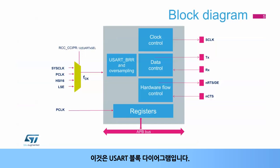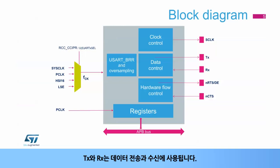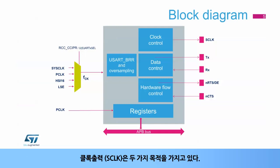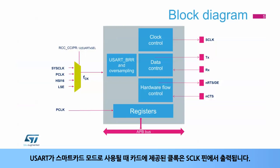This is the USART block diagram. The USART clock FCK can be selected from several sources: system clock, peripheral clock or APB clock, the high-speed internal 16 MHz RC oscillator, or the low-speed external 32.768 kHz crystal oscillator. TX and RX are used for data transmission and reception. N-CTS and NRTS are used for RS-232 hardware flow control. The driver-enable or DE, which is available on the same I/O as NRTS, is used in RS-485 mode. The clock output or SCLK is dual on purpose: when the USART is used in synchronous master mode, the clock provided to the slave device is output on the SCLK pin; when used in smart card mode, the clock provided to the card is output on the SCLK pin.